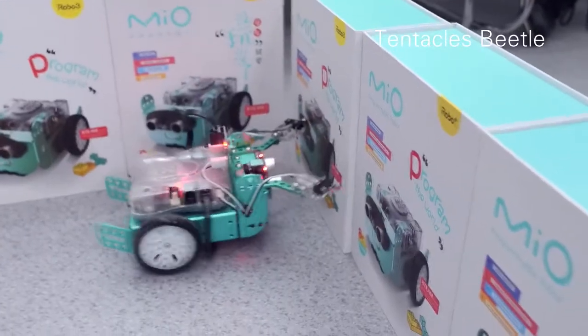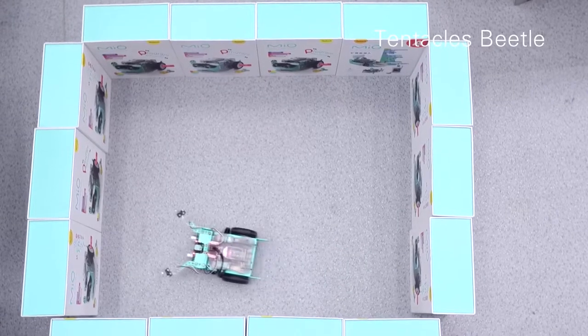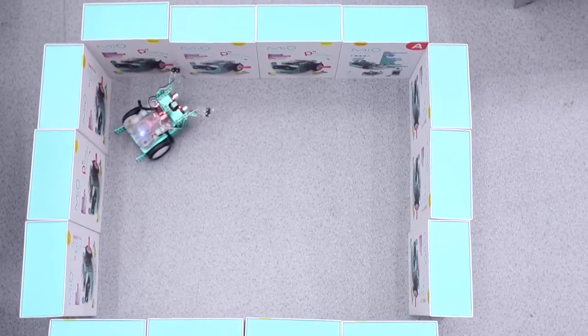Let's turn the Mio into an antenna obstacle avoidance robot. This is a wonderful world. Using fiber switch sensors, once the antenna hits obstacles it responds automatically. Isn't it amazing?